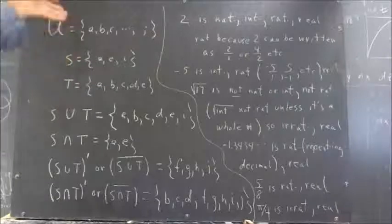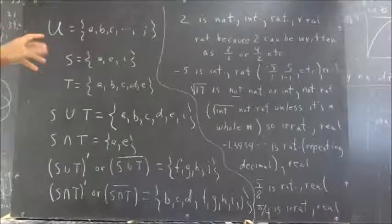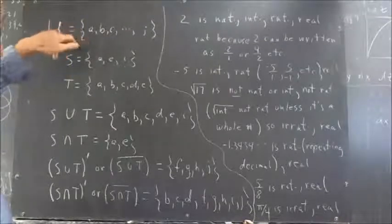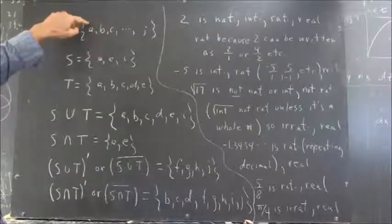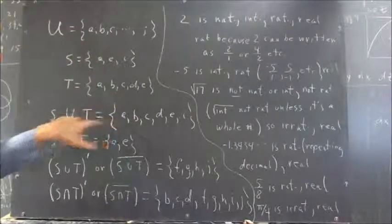So we can go through the universal set, check each element of the universal set since there aren't that many of them, and determine whether each of these elements appears in S or in T. A appears in both S and T, so certainly it appears in S or T. So A is in the set.